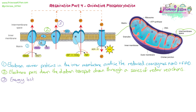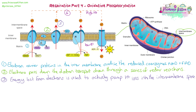As the electrons move along, energy is lost because each protein is at a lower energy level. That energy is used by these proteins to actively pump hydrogen ions into the intermembrane space — you can see those red arrows on all of those proteins actively transporting hydrogen ions from the matrix across the inner membrane into the intermembrane space. This causes a concentration gradient to form as hydrogen ions accumulate there, because the inner membrane is not freely permeable to H+ ions — they can't just diffuse back through. So we get this electrochemical gradient, with high positive charge in the intermembrane space and low positive charge in the matrix.